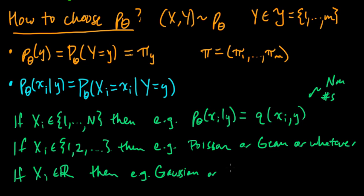Or, you know, gamma, maybe, or whatever. Whatever makes sense for that random variable, for that dimension.